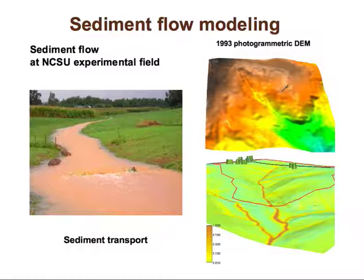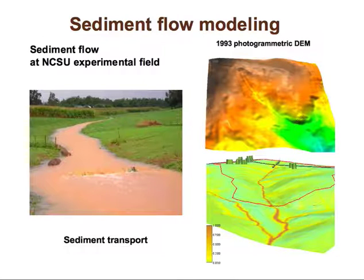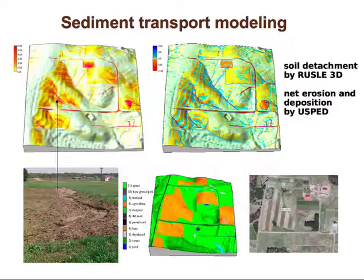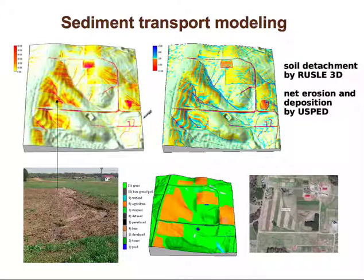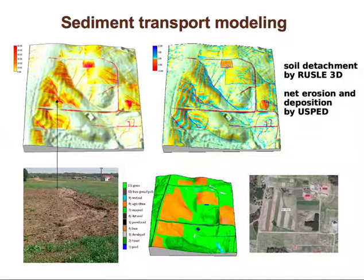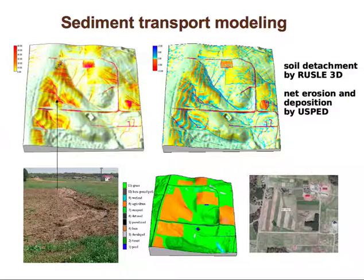Here we have a digital elevation model, and here we have simulated sediment derived from this digital elevation model. Here is the analysis of soil detachment by the revised universal soil loss equation in its three-dimensional simplified form. You can see that when we run this model, we can identify sections that have concentrated flow and steep slopes as potential sources of sediment.